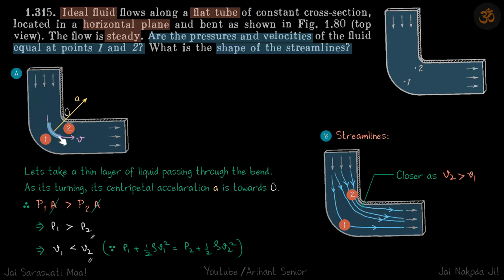Pressure on this face minus pressure on this face, times area. Because we have taken a thin layer, the areas are almost the same. So pressure on this side is greater than pressure on that side. That's why it's turning towards the center O and has centripetal acceleration.